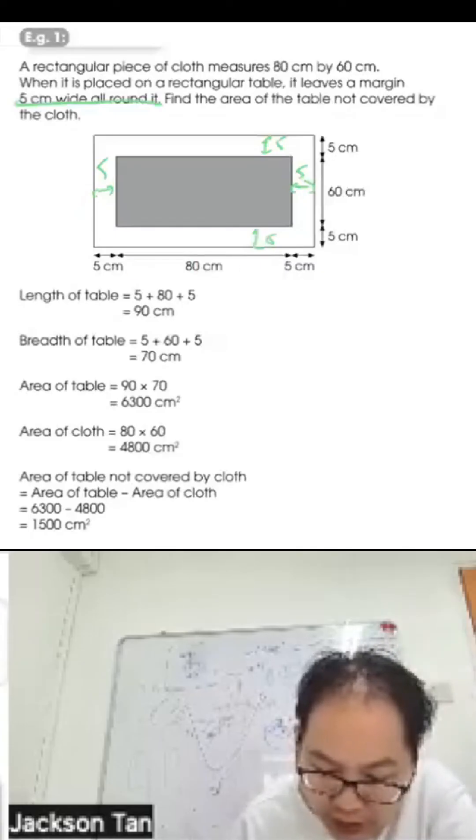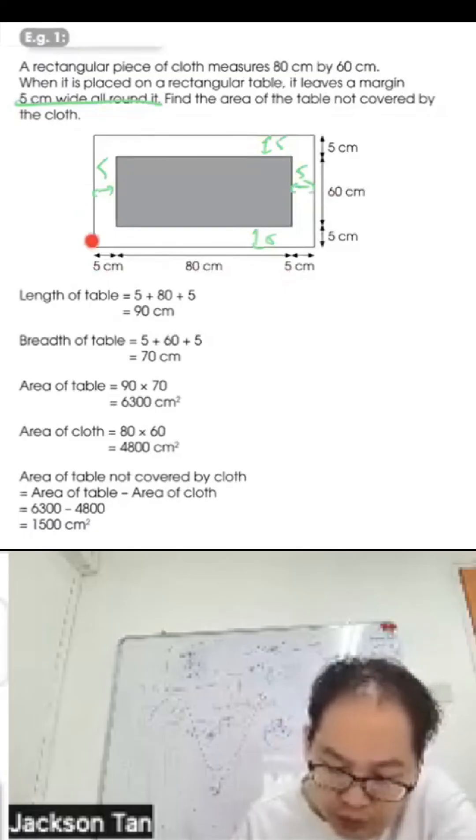So 90 times 70, the whole table is 6300 square cm. The cloth is 80 times 60 equals 4800 square cm. The area not covered by the cloth is 6300 minus 4800 equals 1500 square cm.